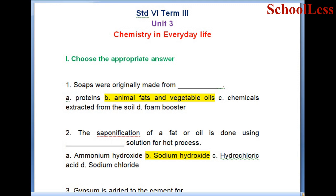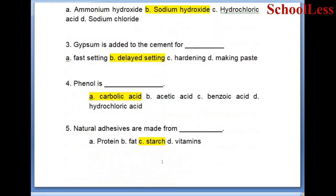Question 2. The saponification of a fat or oil is done by using dash solution. The choices are ammonium hydroxide, sodium hydroxide, hydrochloric acid, and sodium chloride. The correct answer is B - sodium hydroxide.